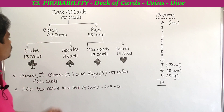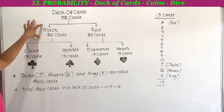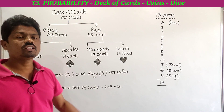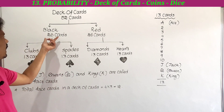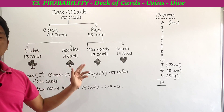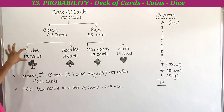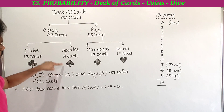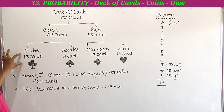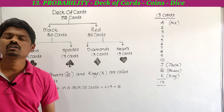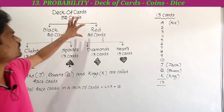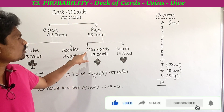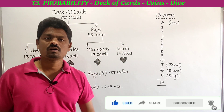These black color cards have been further divided into two suits: one is clubs and the other is spades. Similarly, the red color cards have been divided into two groups: one group is diamonds and the other group is hearts.